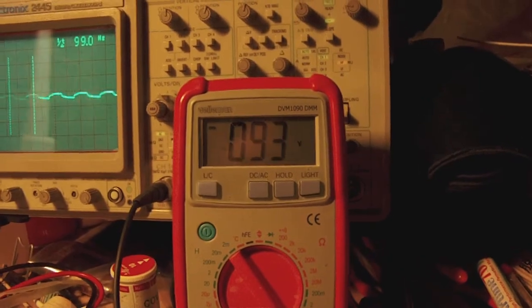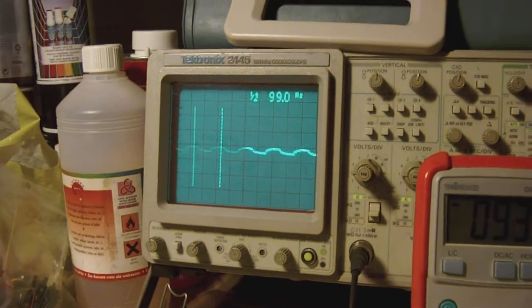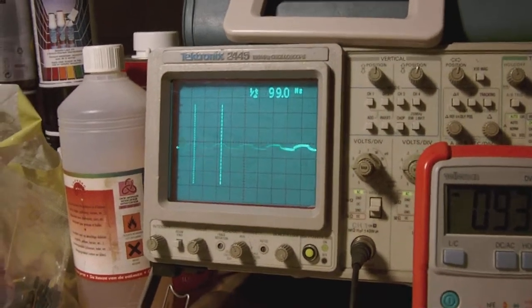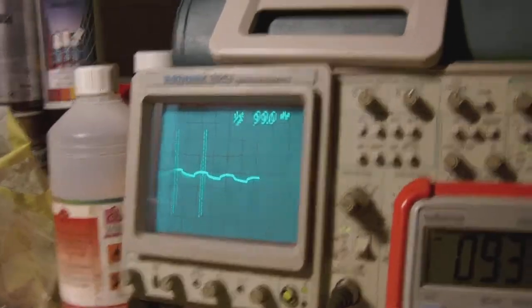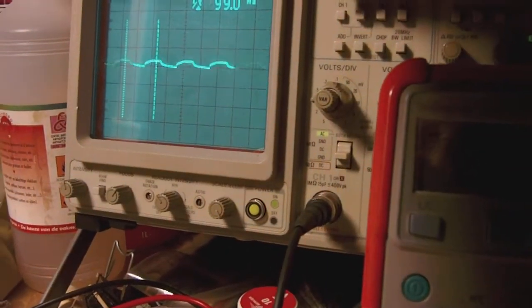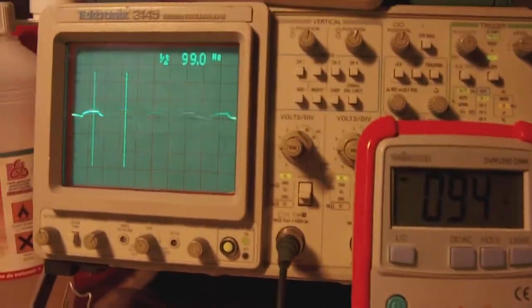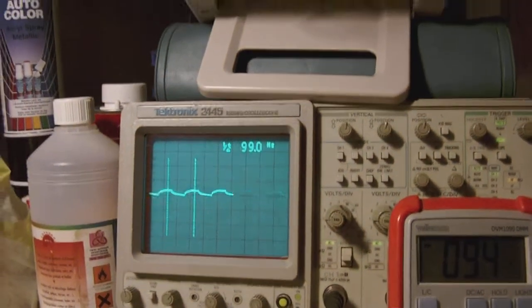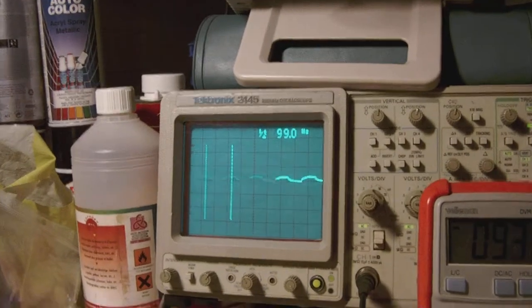Strangely enough the waveform which I measure at the base of the power transistor changes quite a bit in shape as you can see. The voltage dropped to about half a volt and the shape is not exactly the sawtooth shape we saw before.